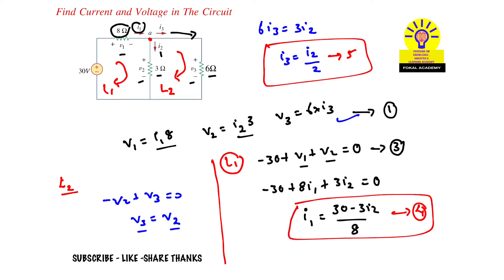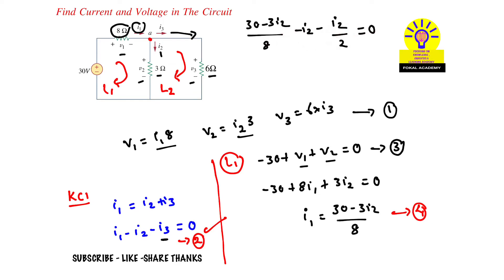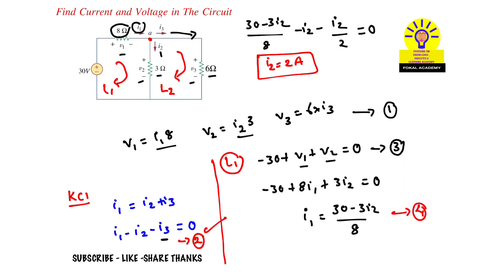Now substitute Equation 5 and Equation 4 into Equation 2. Substituting i3 = i2/2 and the expression for i1, then simplifying gives i2 = 2 amperes. Substituting i2 into Equation 4 gives i1 = 3 amperes, and substituting into Equation 5 gives i3 = 1 ampere.